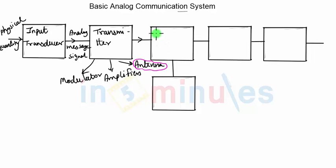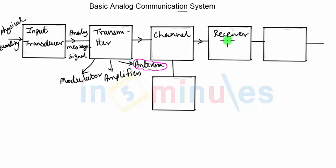The next block in the communication system is the channel. The channel can simply be defined as the connection between the transmitter and the receiver. It carries the output of the transmitter — which contains the information or message — and delivers it to the receiver block. The channel can be a wired channel, such as an optical fiber or any other cable that carries the signal from transmitter to receiver.